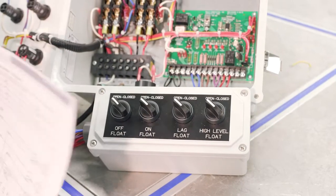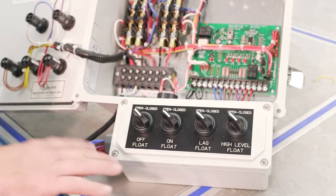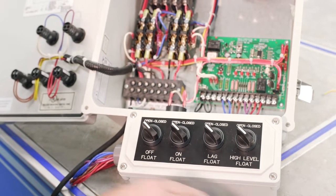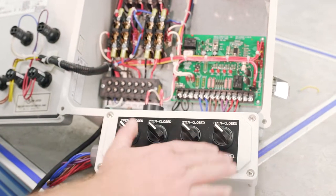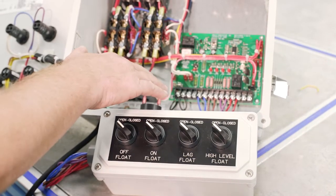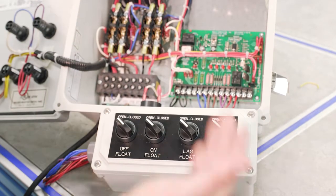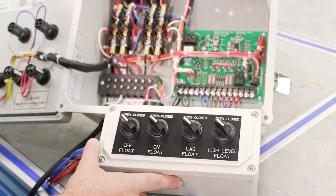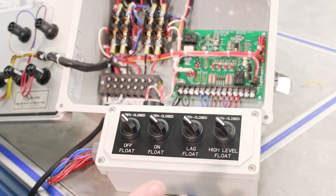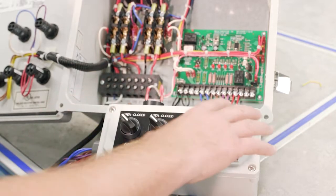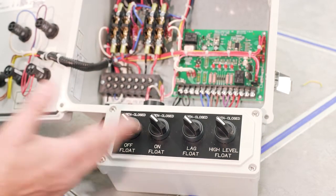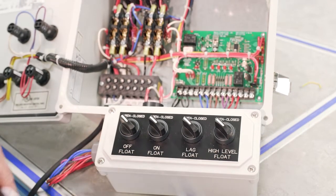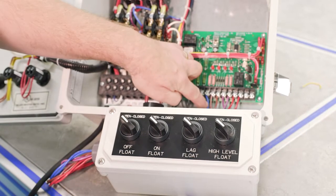Step three is really your float switches. We're going to simulate the float switches that are in the tank. We're going to use these switches here. You can also use jumpers if you want. But just for the purpose of the video, we're going to simulate disconnecting all of our floats, and then we're just going to use these switches here for our floats. And they're all labeled off, on, lag, and high level, and that's how they're wired.